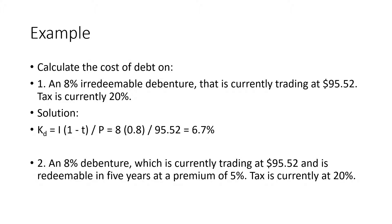Example one: calculate the cost of debt on an 8% irredeemable debenture that is currently trading at 95.52. Tax is currently 20%. Solution: kd = interest / P. Interest is 8% of 100 = $8. So kd = 8 × (1 − 0.20) / 95.52 = 6.7%.